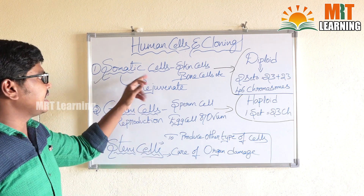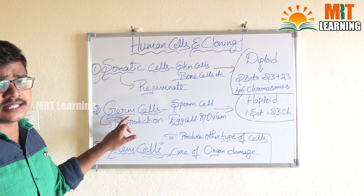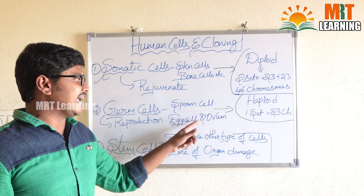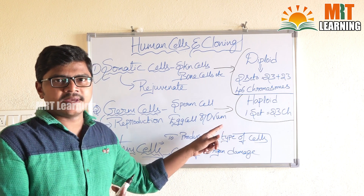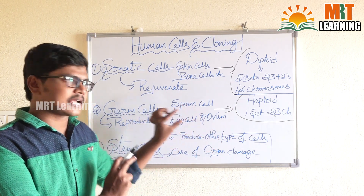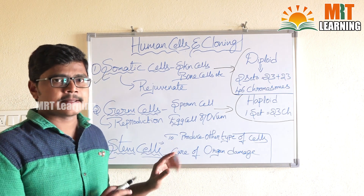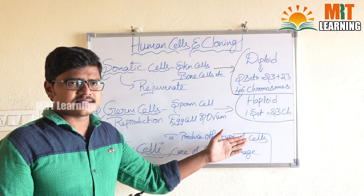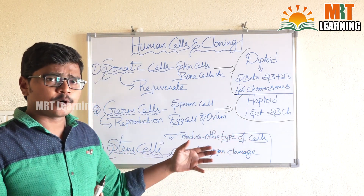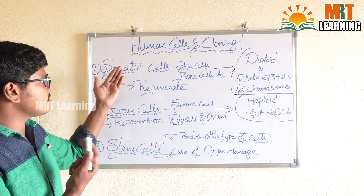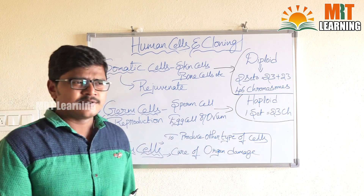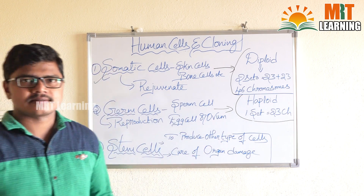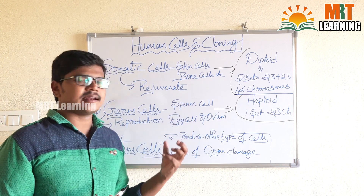The second category is germ cells. Examples of germ cells are the sperm cell in males and the egg cell or ovum in females — only these two cells come under germ cells. The third category is stem cells. Stem cells have the capability to produce other types of cells — they may produce somatic cells or germ cells. There is no specific fixed example of stem cells in our body.